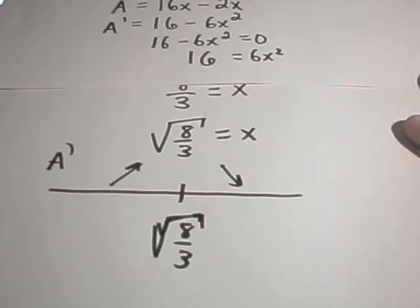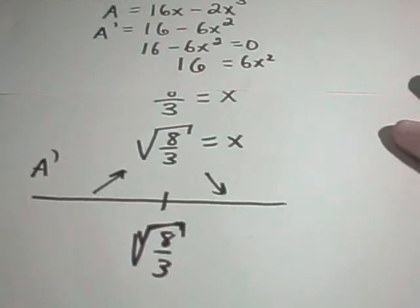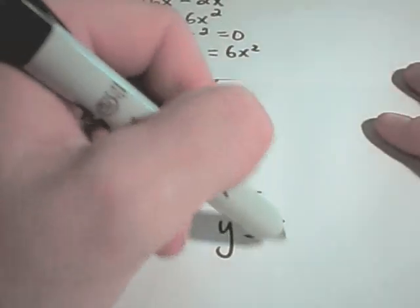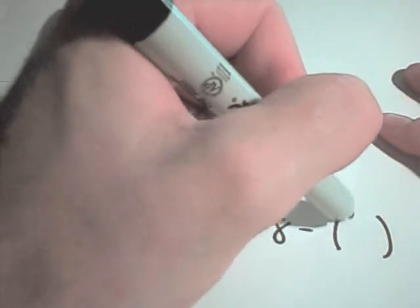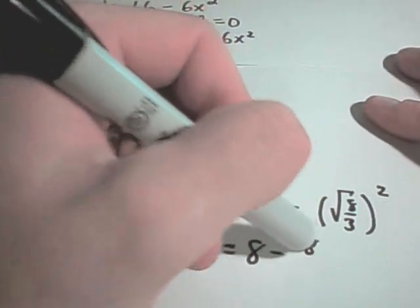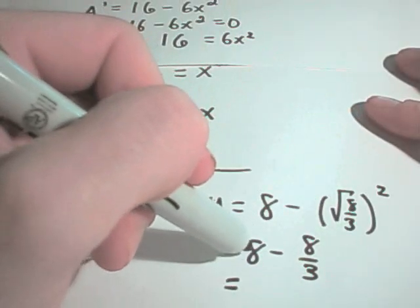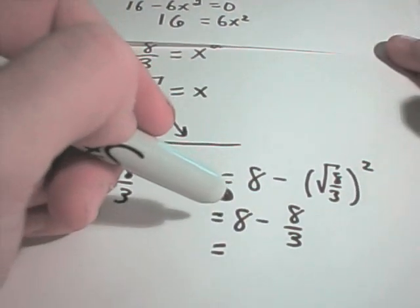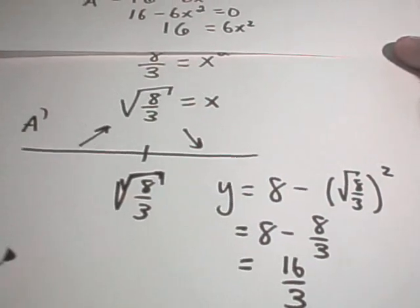And, again, this problem wanted the dimensions of the rectangle. Well, again, we know our relationship. We know that y is equal to 8 minus x squared. So, I'm going to plug in the fact that x is square root of 8 over 3 squared. Well, if you square square root, you get 8 thirds. If I multiply top and bottom by 3, I'll get 24 over 3. 24 minus 8 is 16 thirds.